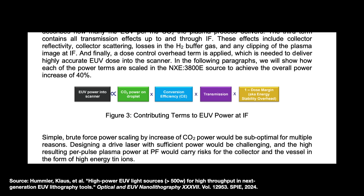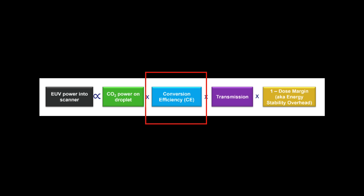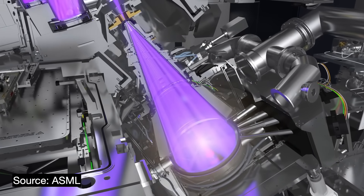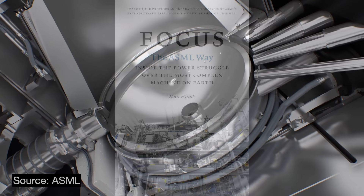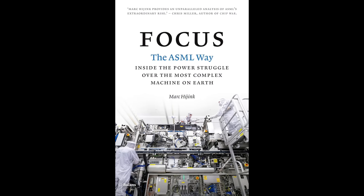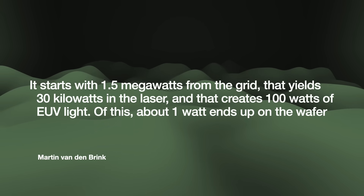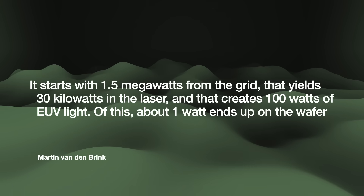The equation has several components. First, how much CO2 laser power can we deliver to the tin droplets? In the case of an LPP system, this is the product of the drive laser's power as well as the tin droplet repetition rate — how many tens of thousands of droplets handled per second. Second, how effectively can we convert that CO2 power into useful EUV light? This is known as conversion efficiency, or CE. It measures how much in-band EUV light is emitted and collected by the tin plasma for the amount of power going into the system. ASML's former CTO Martin Vandenbrink puts it into context: it starts with 1.5 megawatts from the grid, that yields 30 kilowatts in the laser, and that creates 100 watts of EUV light. Of this, about 1 watt ends up on the wafer.